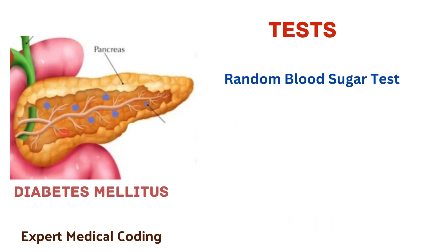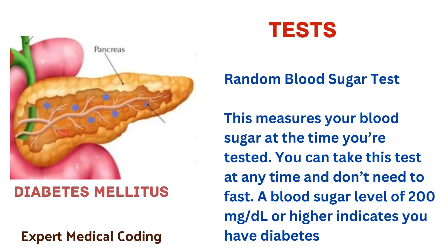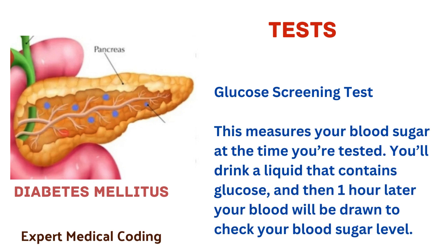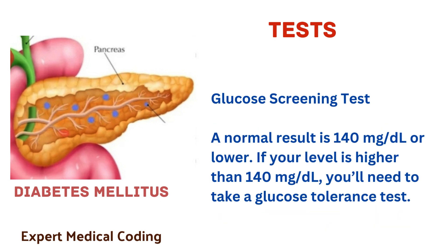The next test is the random blood sugar test. This measures your blood sugar at the time you are tested. You can take this test at any time and don't need to fast. A blood sugar level of 200 mg/dL or higher indicates that you have diabetes. The next test is the glucose screening test. This measures your blood sugar at the time you are tested. You will drink a liquid that contains glucose and then 1 hour later your blood will be drawn to check your blood sugar levels. A normal result is 140 mg/dL or lower. If your level is higher than 140 mg/dL, you will need to take a glucose tolerance test.